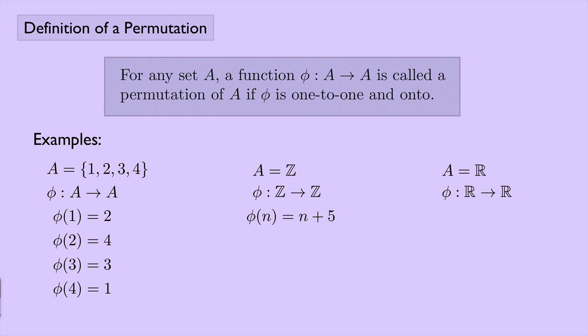And let phi then be a mapping from the set of real numbers to itself. And an example could be phi of x equals 8x minus two. Again, you can check that this is one-to-one and onto, so it is a permutation.